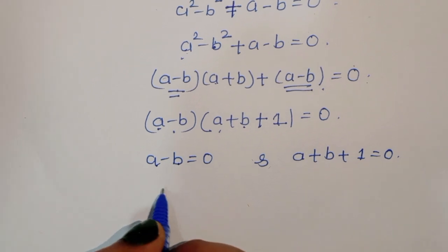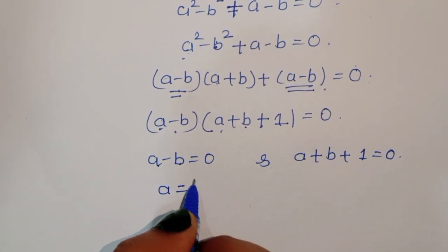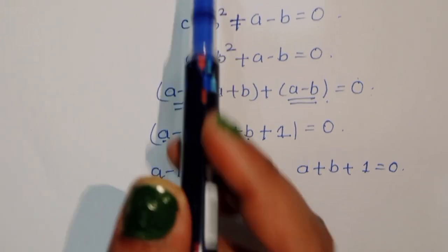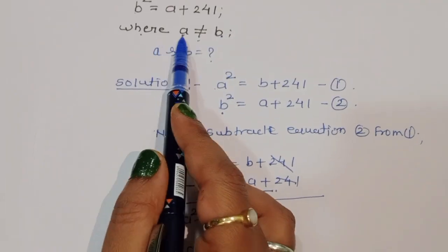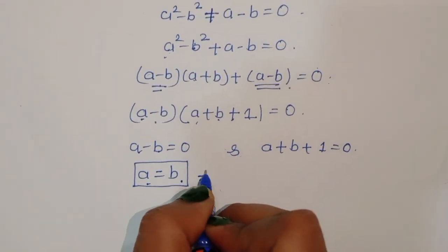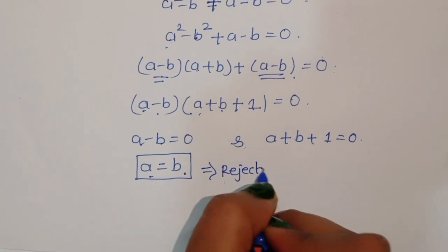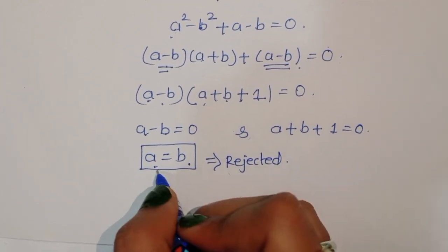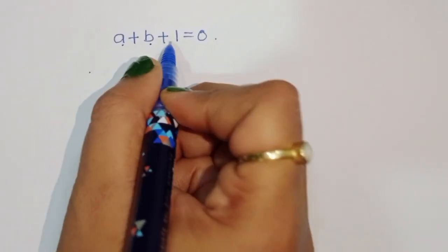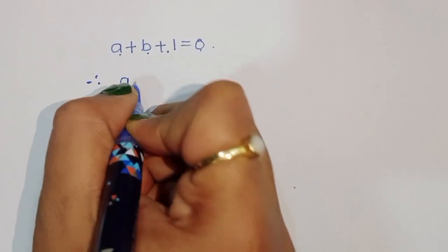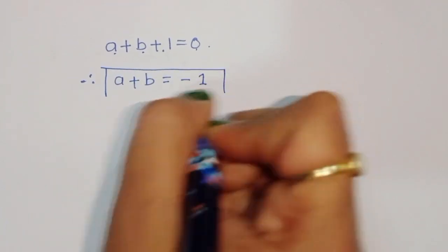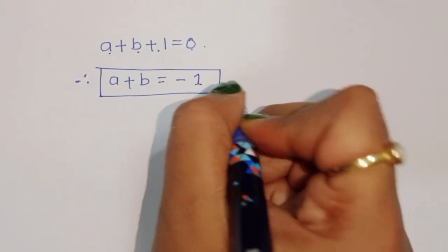From A minus B equals 0, we get A equals B. But the given condition states A is not equal to B, so this solution is rejected. Therefore, from A plus B plus 1 equals 0, we get A plus B equals minus 1. This is equation 3.